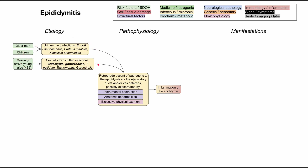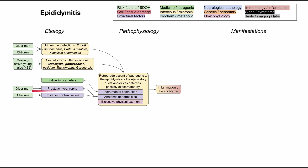Some examples of the exacerbating factors: you're predisposed to epididymitis if you have an indwelling catheter, which provides instrumental obstruction that helps the pathogen work its way up through the genitourinary tract. Anatomic abnormalities include prostatic hypertrophy in older men and posterior urethral valves in children. Excessive physical exertion also plays a role — repetitive activities like running and jumping while playing sports, or exercise and sex with a full bladder, can predispose you to retrograde ascent, although these are typically more rare.